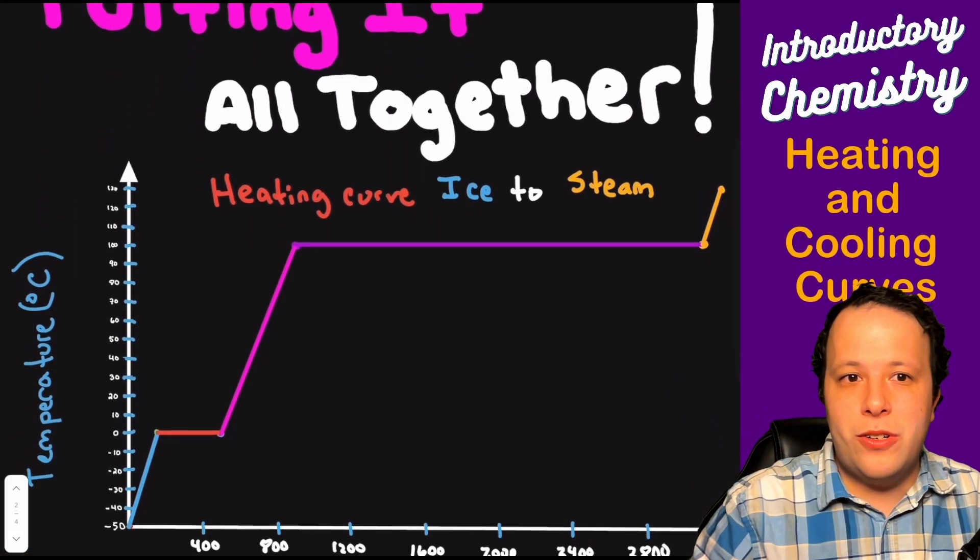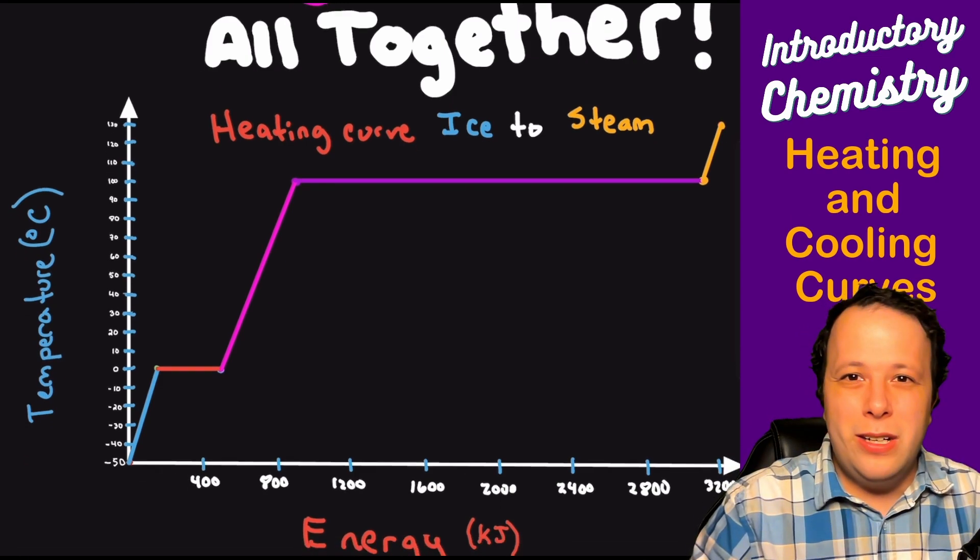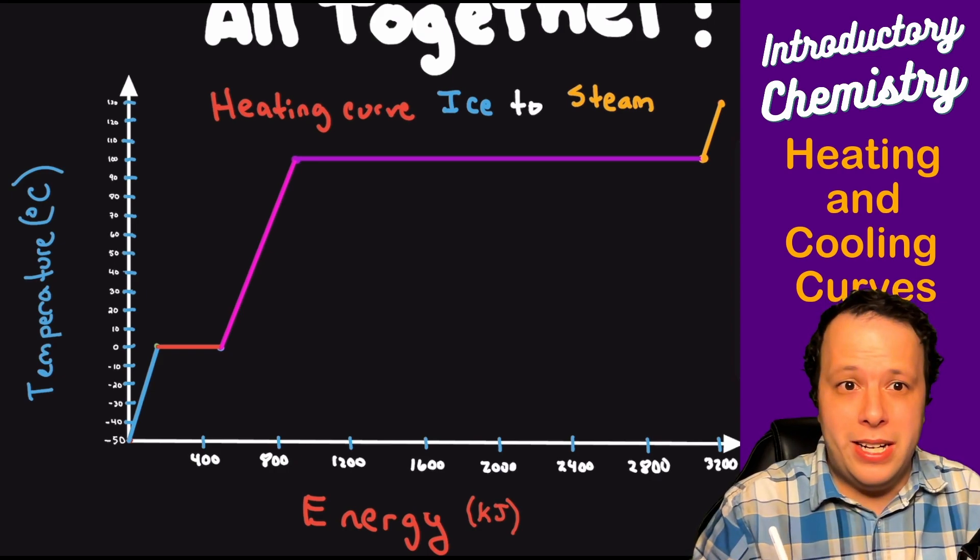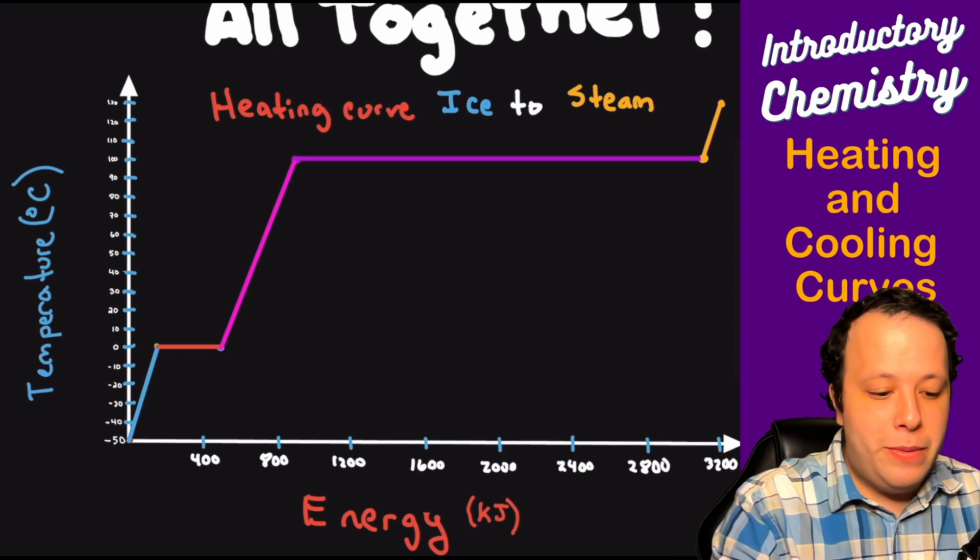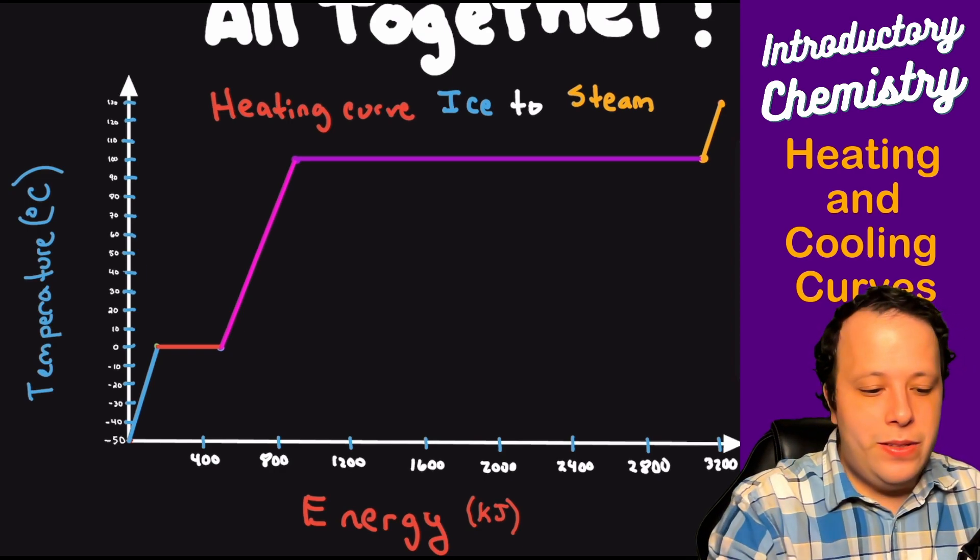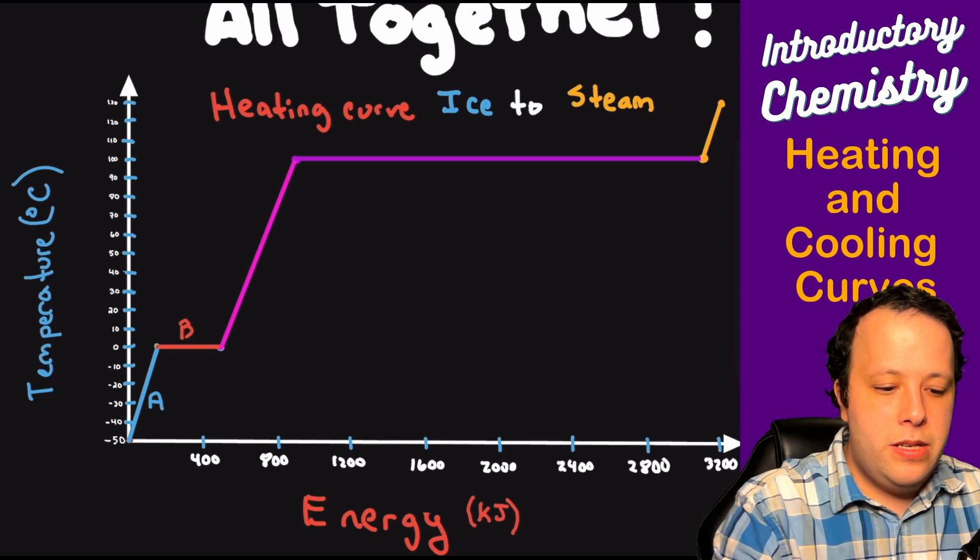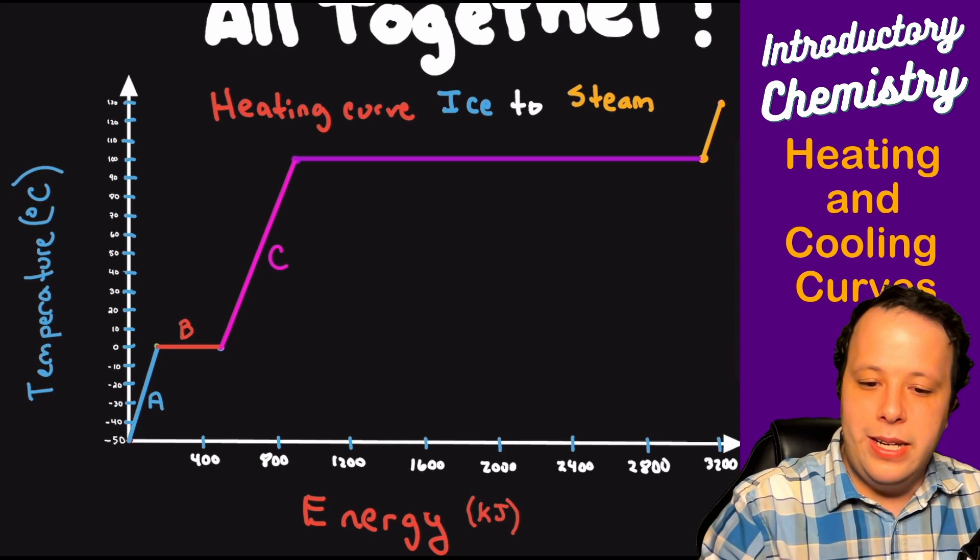Essentially if I were to try to show a heating curve from ice to steam it can look a little bit like this. So notice how I have many different slopes, many different plateaus that are here. So to label them as different regions. So let's just call them like A, B, C, D, and E, just labeling them by their slopes and plateaus.